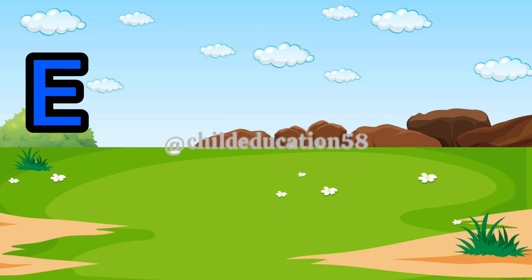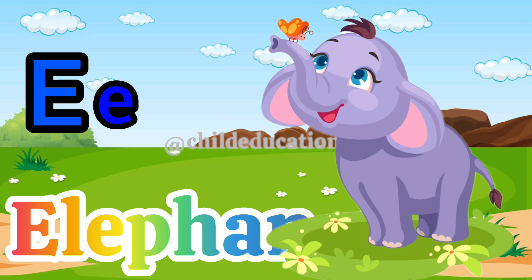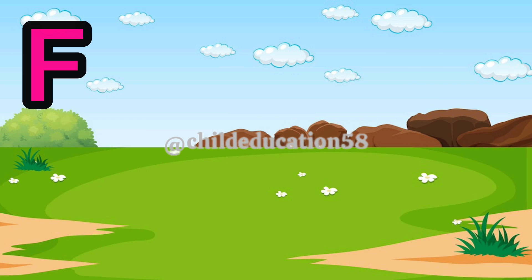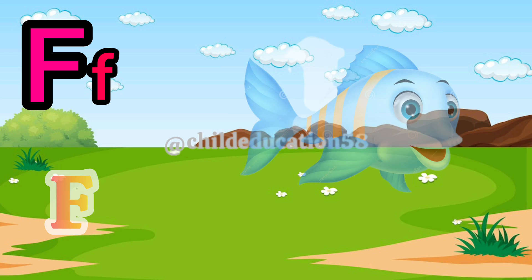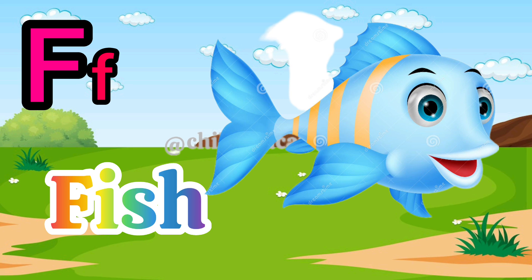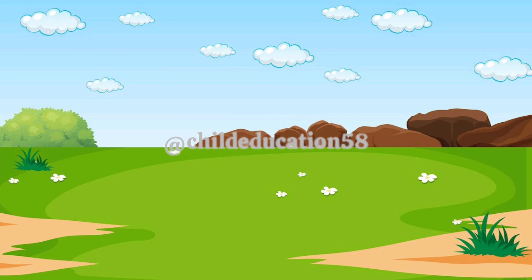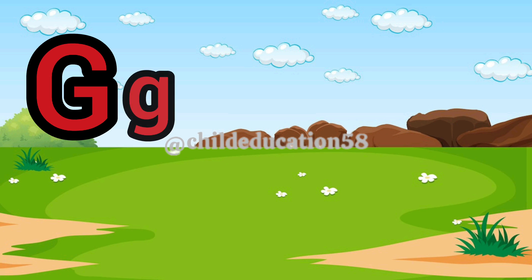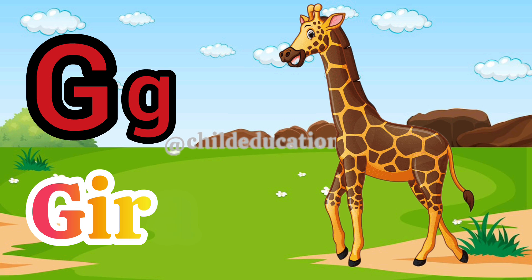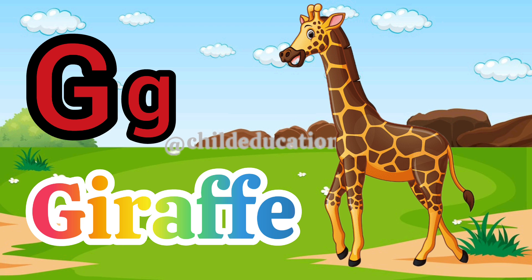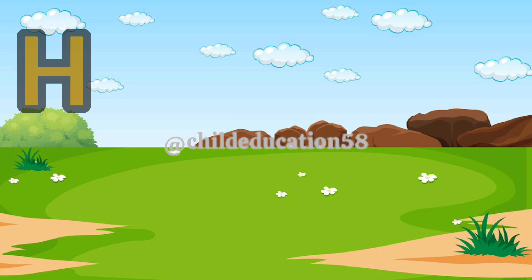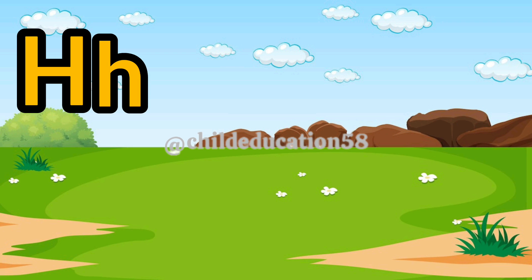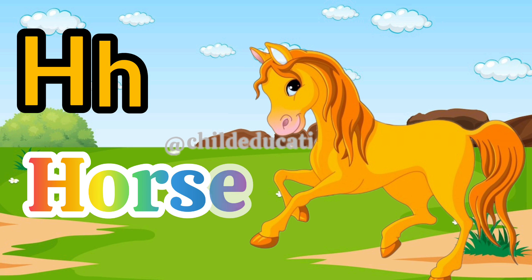Capital E, small e, E for elephant. Capital F, small f, F for fish. Capital G, small g, G for giraffe.